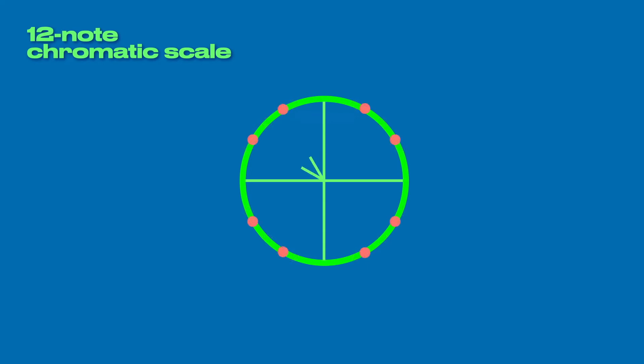And while a 12-note scale contains three intervals in each quadrant, the 16-note scale contains four.